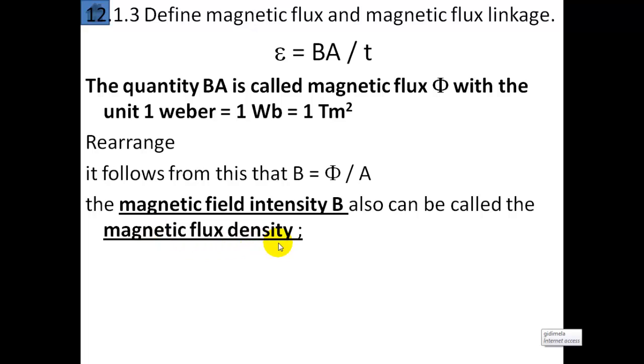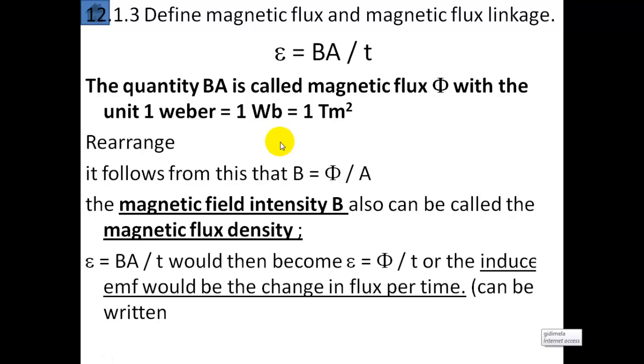When you're asked to define the flux, you just need to write it in terms of BA. The flux equals BA, the magnetic field strength or flux density times the area. So the EMF equals BA over t, the flux divided by time, the rate of change in flux.